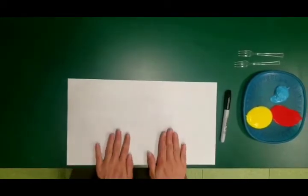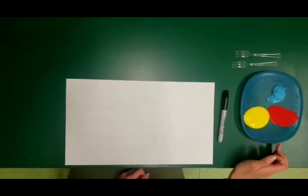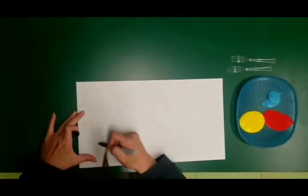Materials we'll need: a piece of white paper, a marker, some paints, and forks to create the spikes. So let's begin drawing the porcupine.